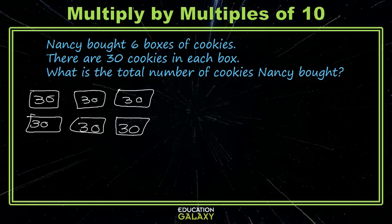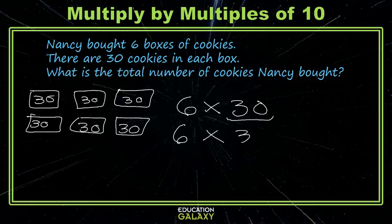But we're kind of looking for some new ways. So here we see that we have six equal groups of 30, and we can represent that total using multiplication. We do know that 30 is three groups of 10, and we can rewrite this as 3 times 10.